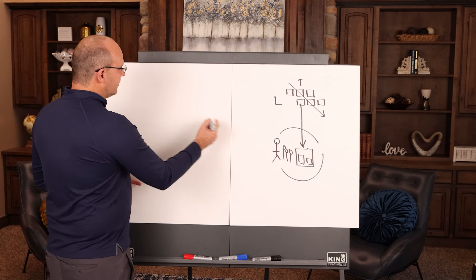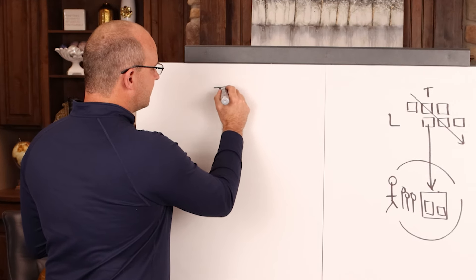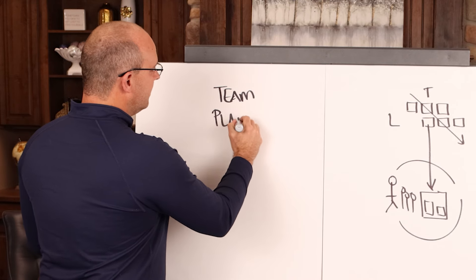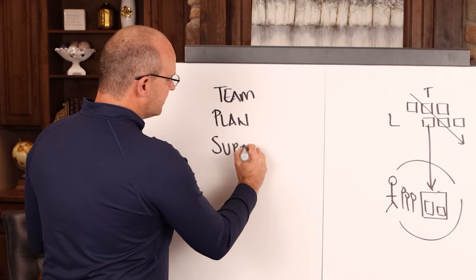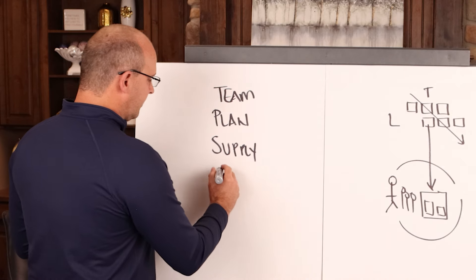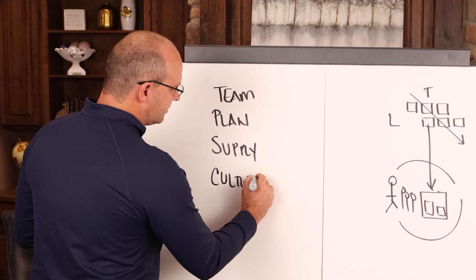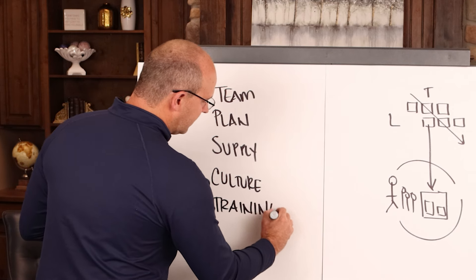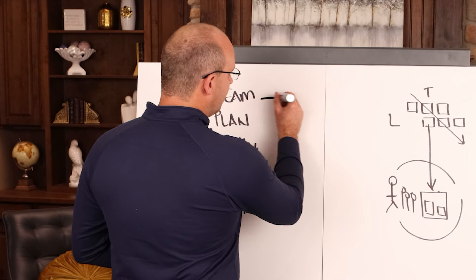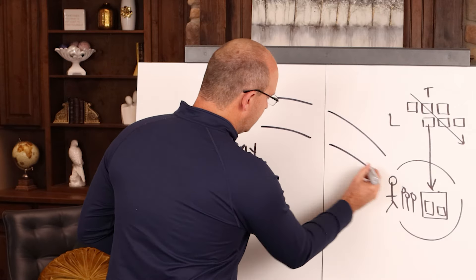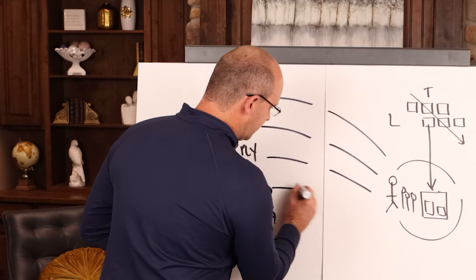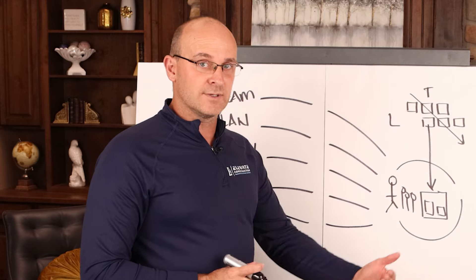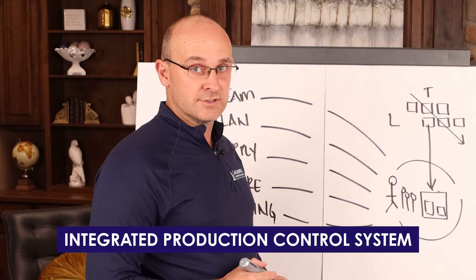So the crew will need the support from the team, an amazing plan, the supply chain so that means the materials and everything to do their work, the right culture on site to have the supportive systems, and the right training. So when I look at this system, I really love it because what we are doing here is getting the foreman and the crew everything that they need. I call this system, when it ties with tact and last planner, the integrative production control system.